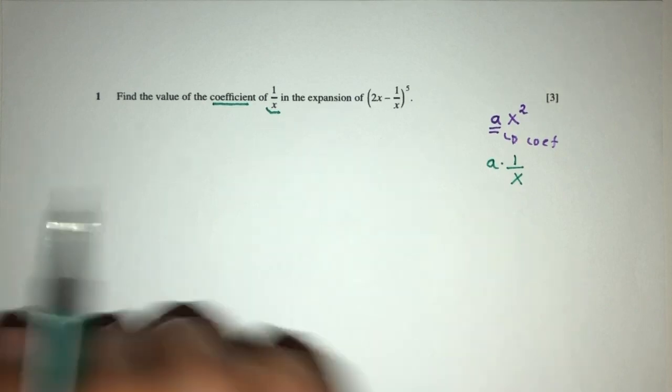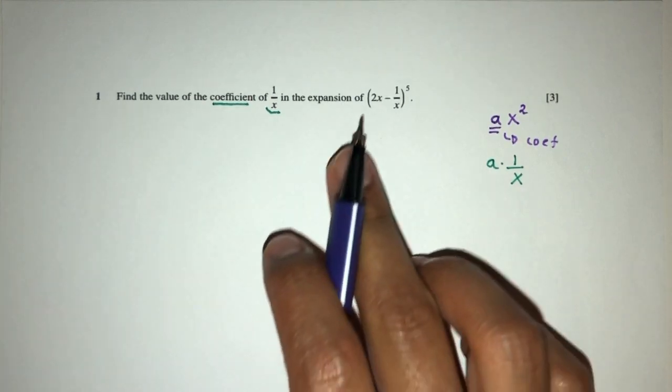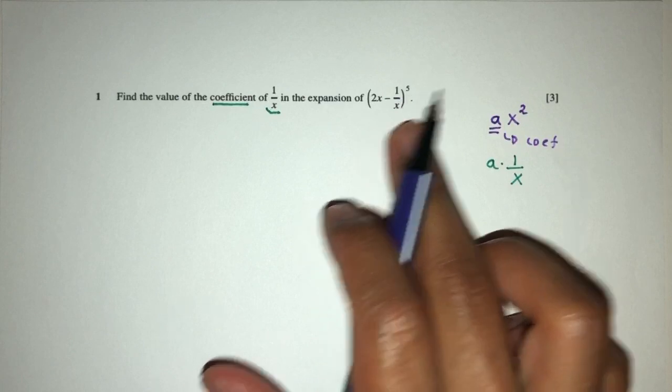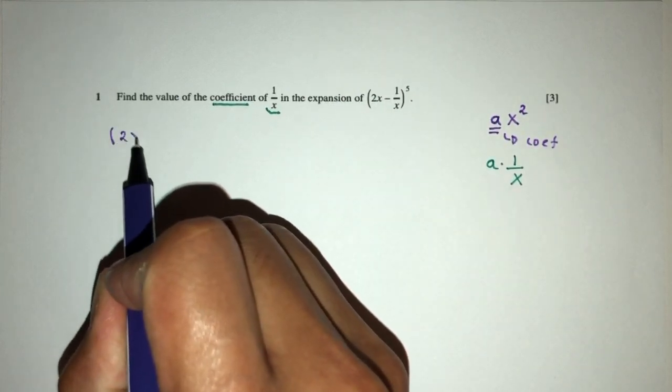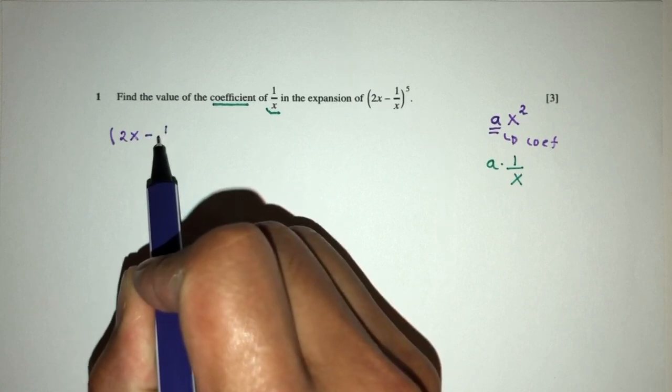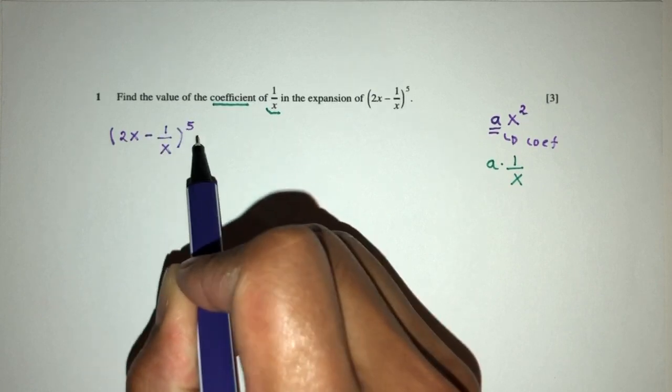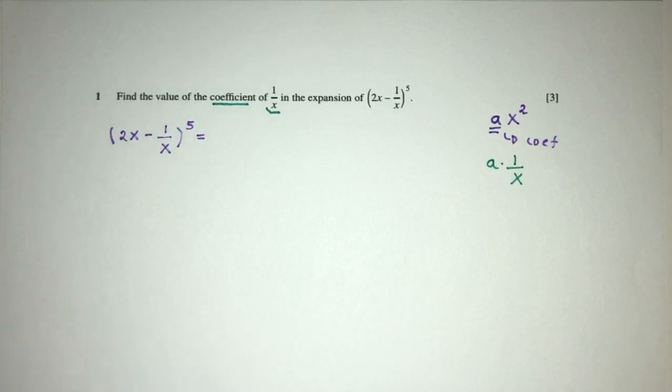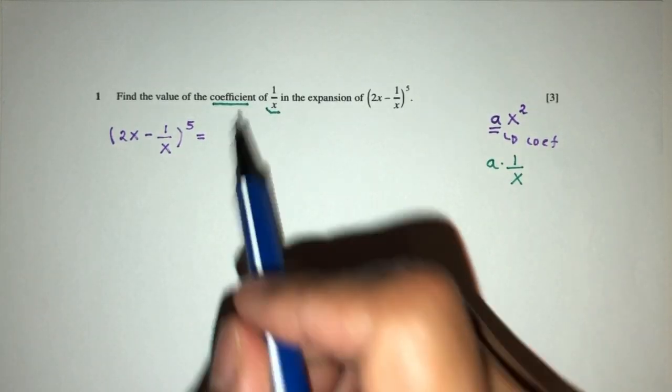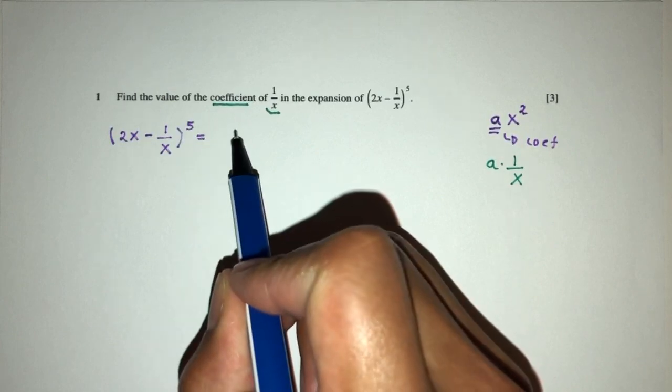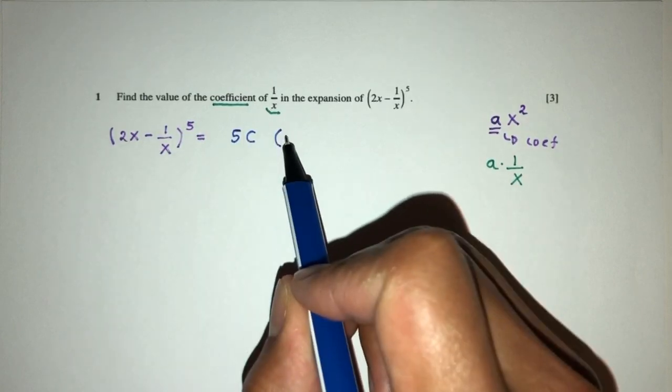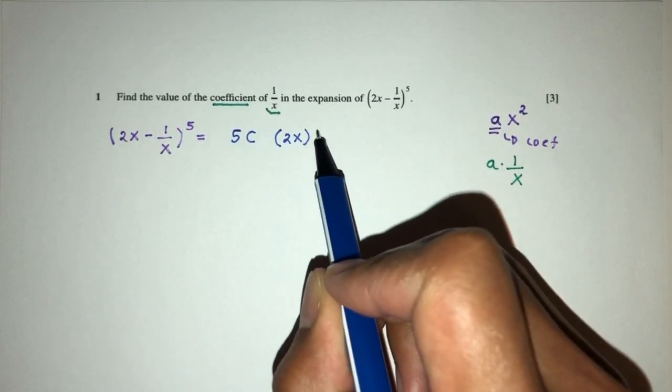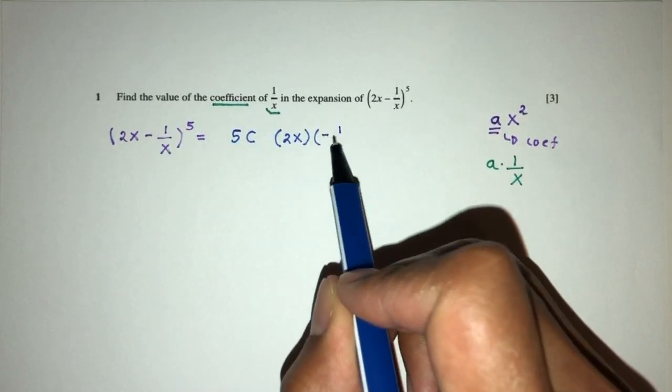So let's see how we can find this. We know that we have to expand this binomial expansion. So I have 2x minus 1 over x power 5. By using the formula, we can have an expansion as follows. I will have 5 because the power is 5. Choose something we don't know yet. And then the first term is 2x, and then here we have minus 1 over x.